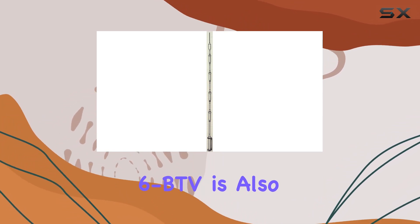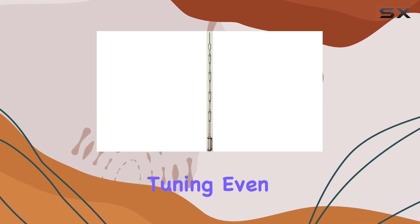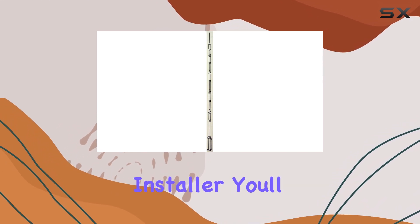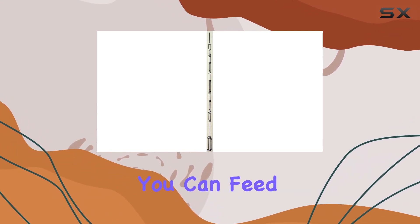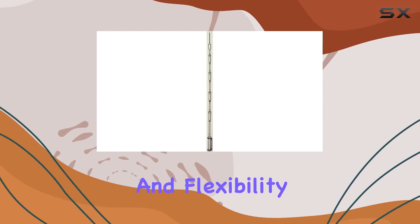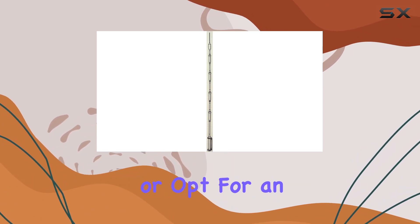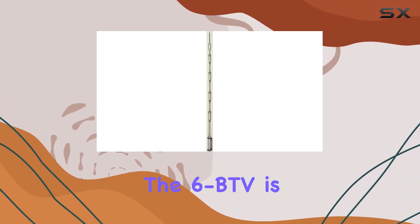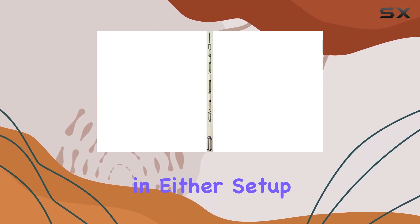The Hustler 6 BTV is also praised for its ease of assembly and tuning. Even if you're not a seasoned antenna installer, you'll find the process straightforward and hassle-free. You can feed it with any length of 50-ohm coax, adding to its convenience and flexibility. Whether you choose to ground-mount it with or without radials or opt for an elevated mount with radials, the 6 BTV is designed to deliver optimal performance in either setup.